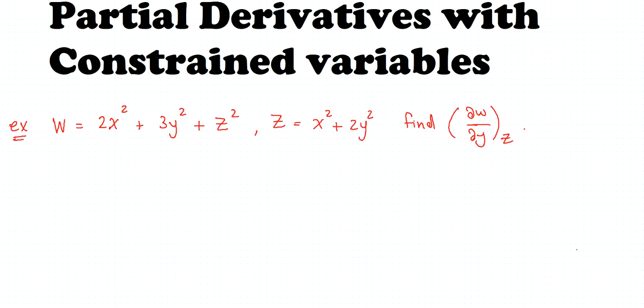Hi, in this video I'm going to be solving an example on partial derivatives with constrained variables. Here we have the equation w equals 2x squared plus 3y squared plus z squared, z equals x squared plus 2y squared. And we want to find the partial derivative of w with respect to y, keeping z constant.